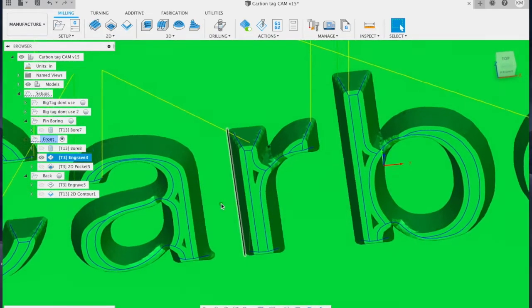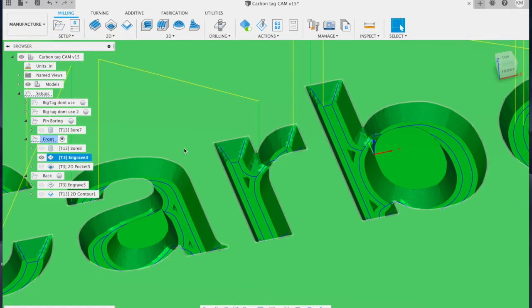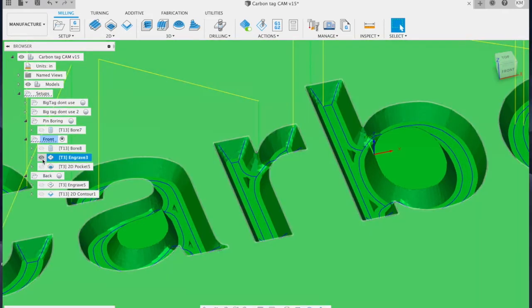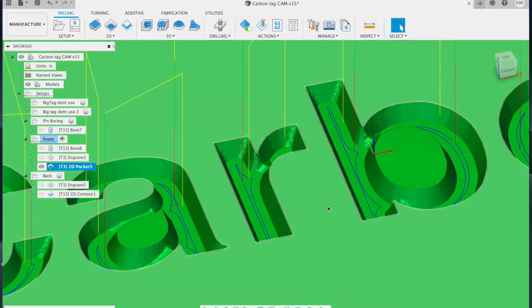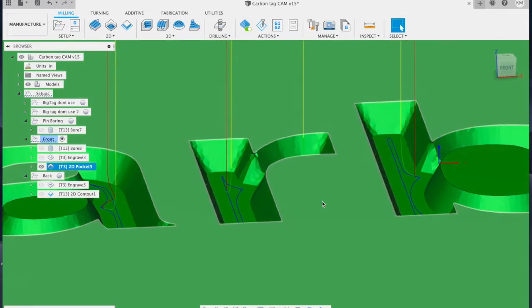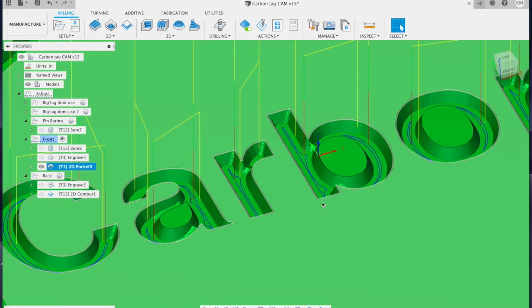Because the engraving operation follows the edges though, it can leave some islands of material in the center depending on the size of the text and the angle of the tool. So a second 2D pocketing operation is needed to clean up the floor of the text. Because this is also cut using the V-bit, you need to adjust the amount of radial stock to leave so the tool only cuts in the center of the letters.